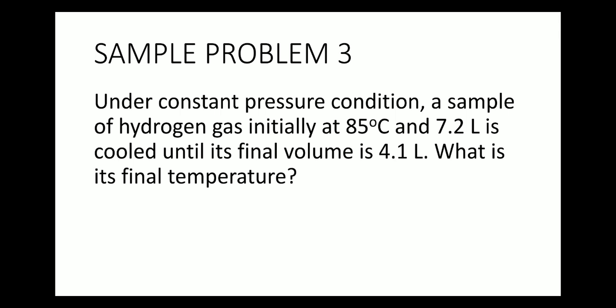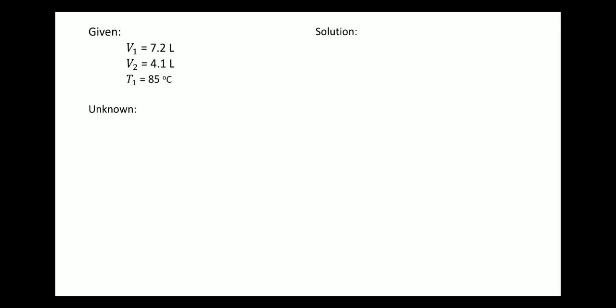Number 3. Under constant pressure, a sample of hydrogen gas initially at 85 degrees Celsius and 7.2 liters is cooled until its final volume is 4.1 liters. What is its final temperature? Given: V1 is 7.2 liters, V2 is 4.1 liters, T1 is 85 degrees Celsius. We notice the volume decreases from 7.2 to 4.1, so T2 must also decrease — it must be less than 85. T2 is unknown.